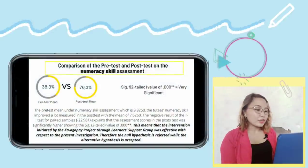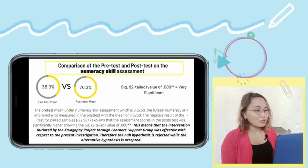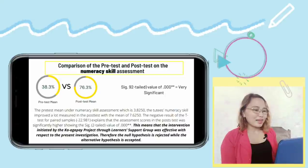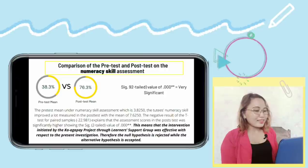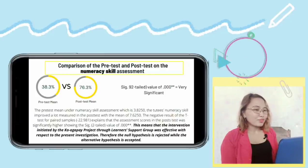The pre-test mean under numeracy skills assessment was 3.8250, and numeracy skills improved significantly in the post-test with a mean of 7.6250. The paired t-test shows that post-test scores were significantly higher, with a significant two-tailed value of 0.000. This means the intervention by the Kaagapay Project through the learner support group was effective. Therefore, the null hypothesis is rejected while the alternative hypothesis is accepted.